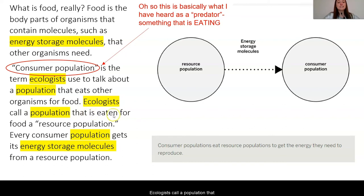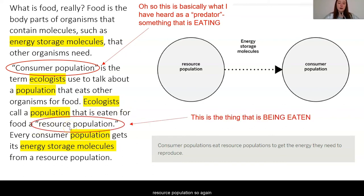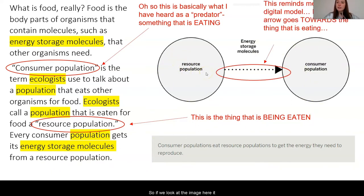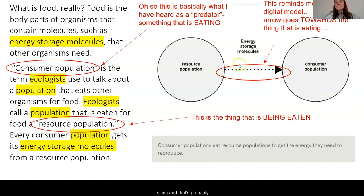Ecologists call a population that is eaten for food a resource population — this is the thing being eaten. Every consumer population gets its energy storage molecules from a resource population. Looking at the image here, it reminds me of the digital model food web overlay with arrows between organisms. The arrow points toward the thing that is doing the eating, probably because it's receiving those energy storage molecules from the resource population.